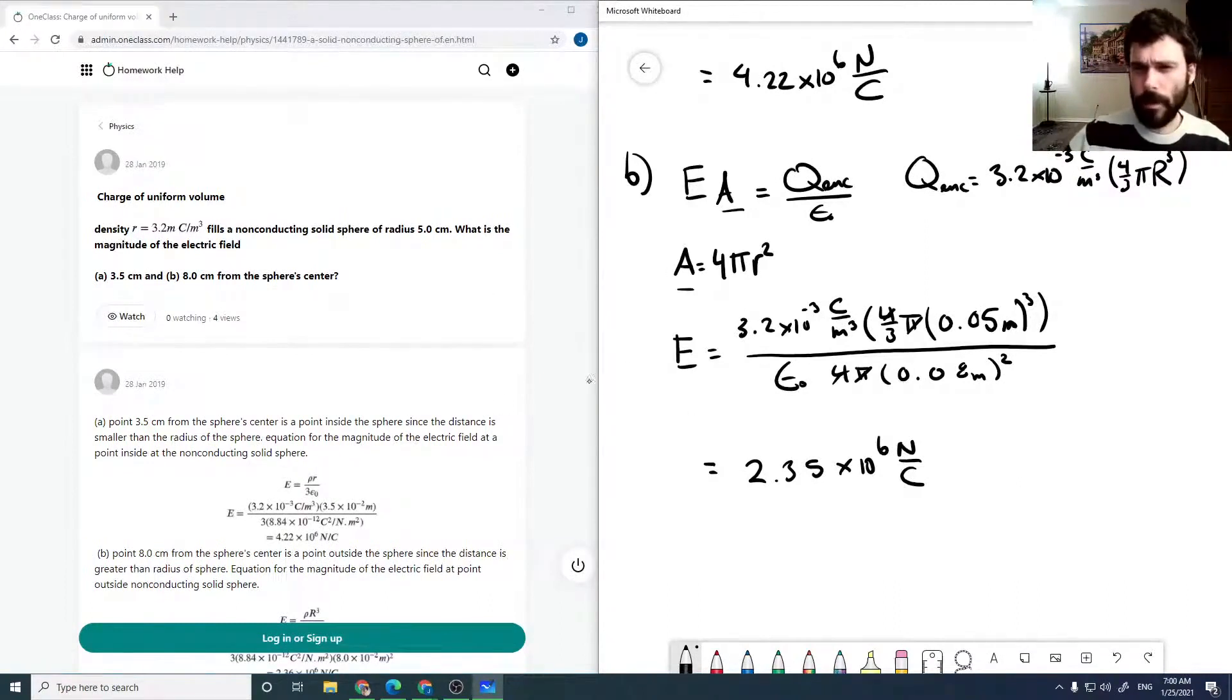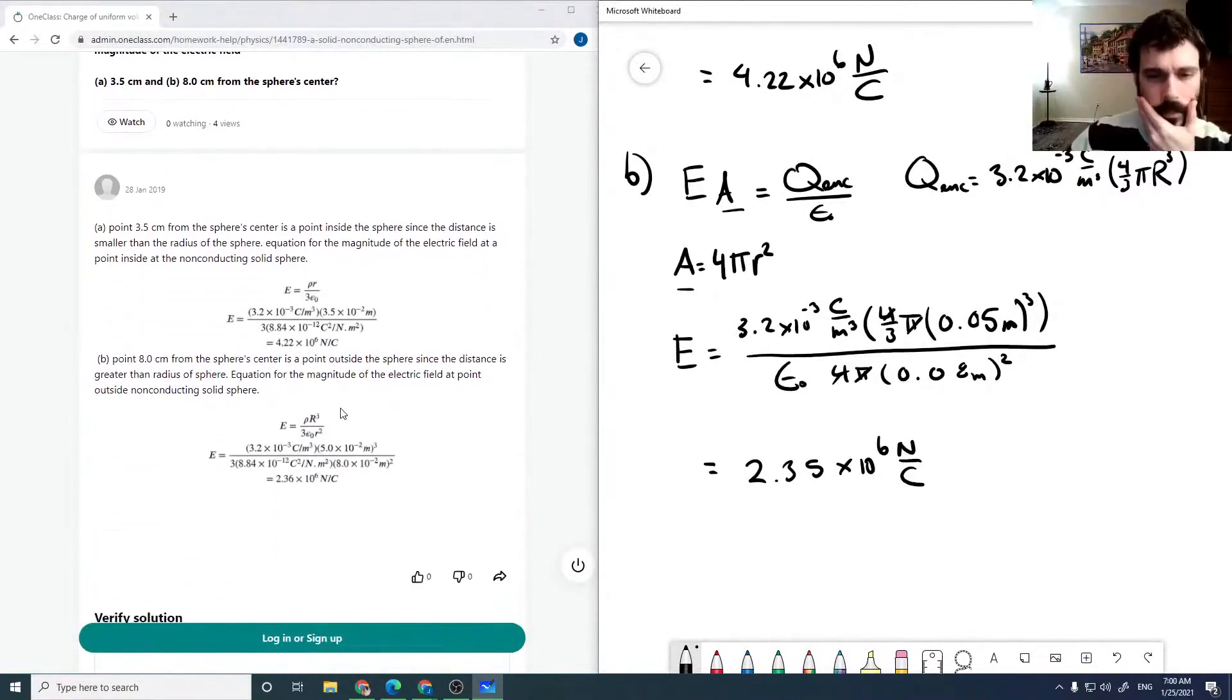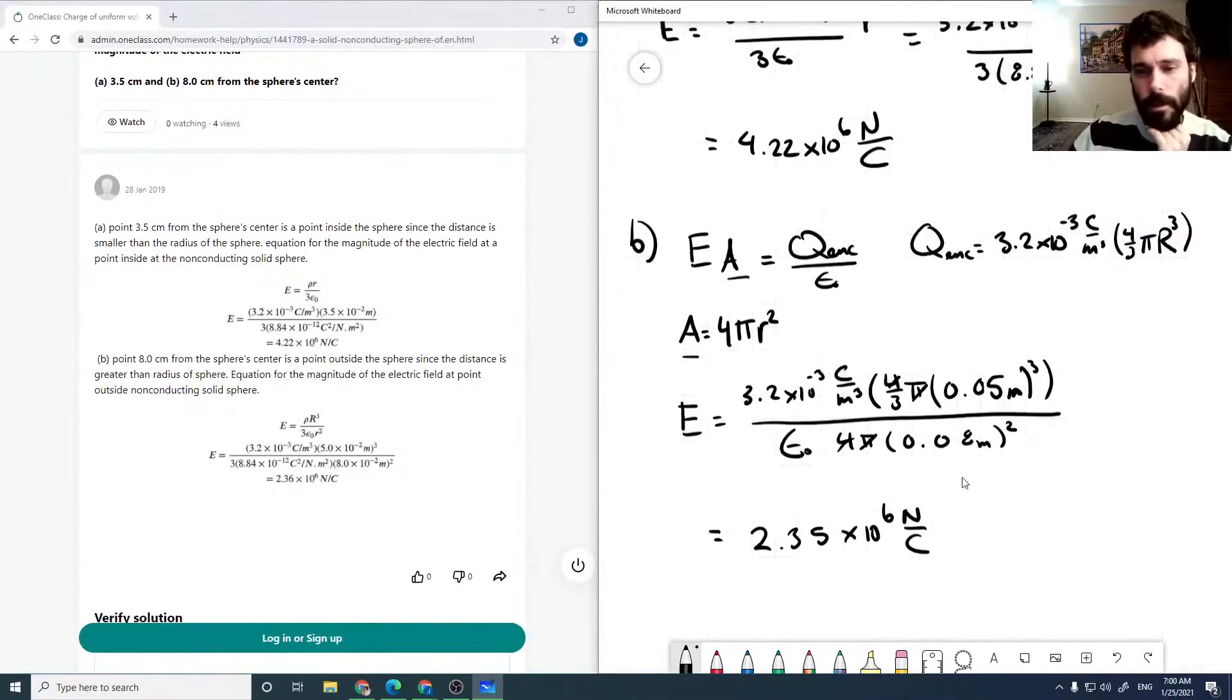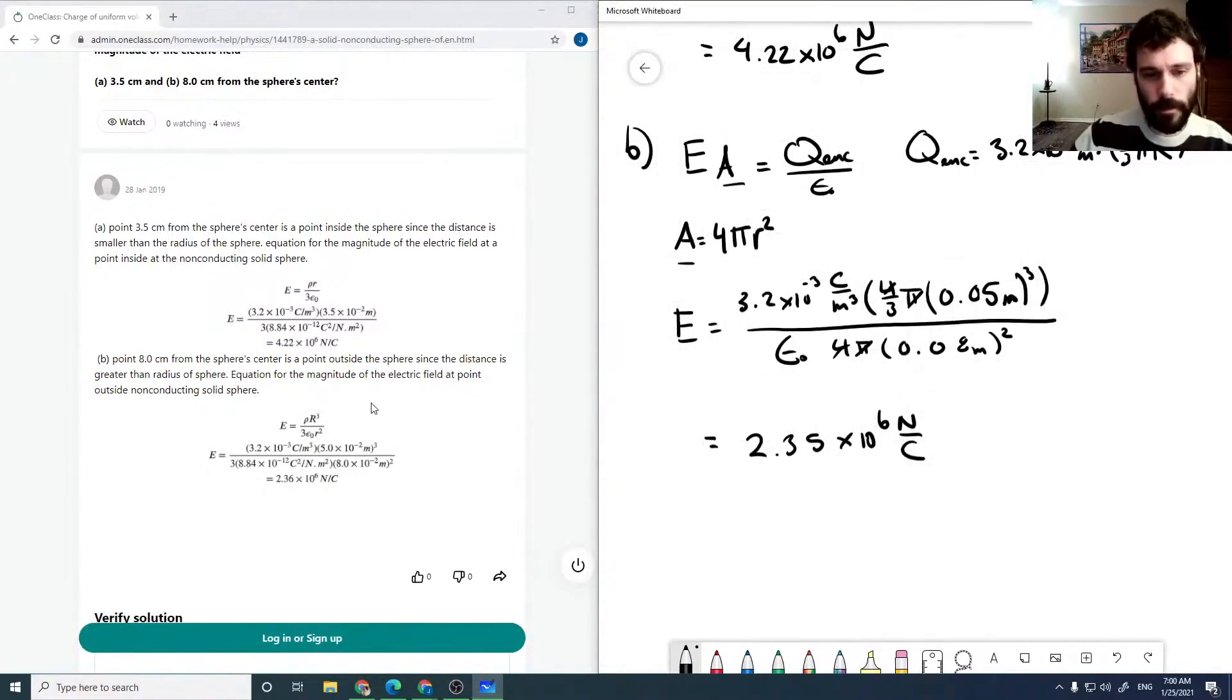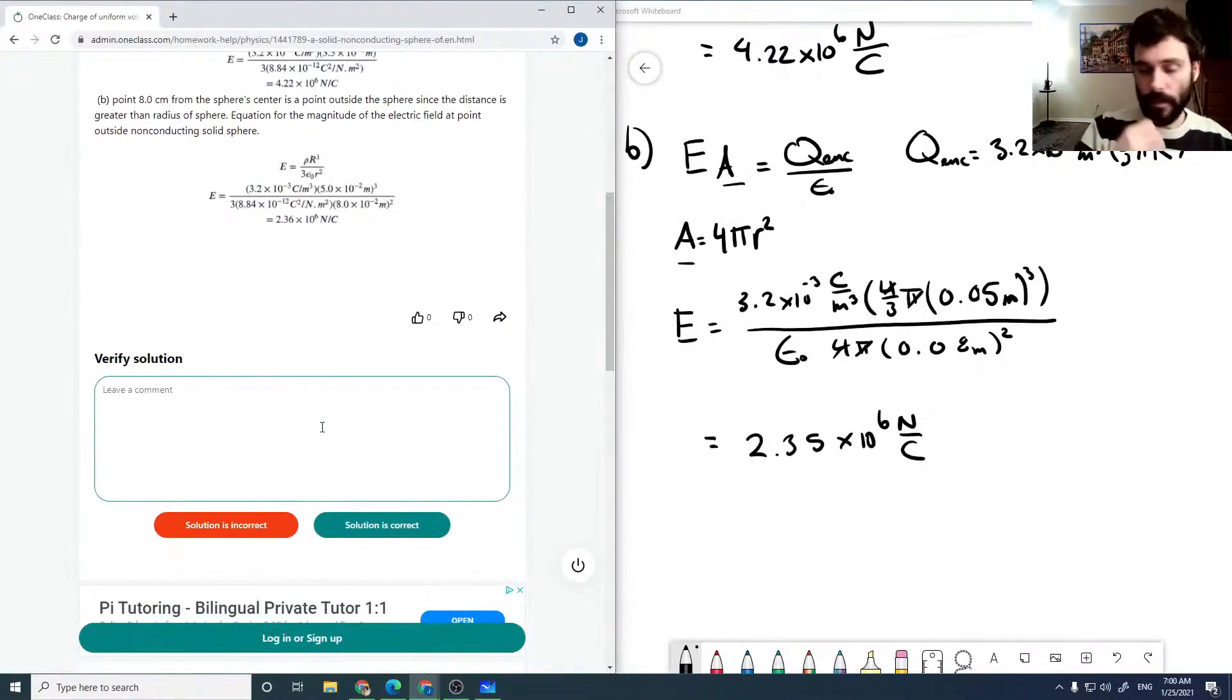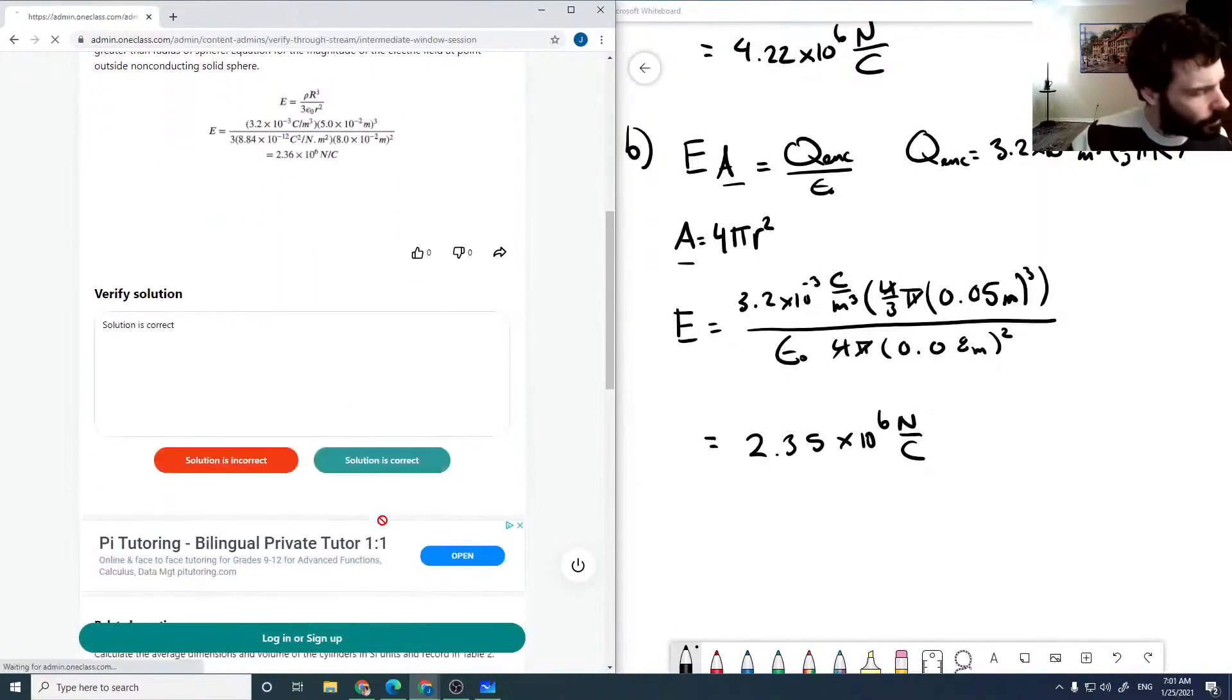We can check through the solution here. Inside the sphere is 4.22 times 10 to the 6, and outside it's 2.35, 2.36. That would be just rounding differences, and I think a different epsilon naught value that they used as well. The solution is correct. Thank you.